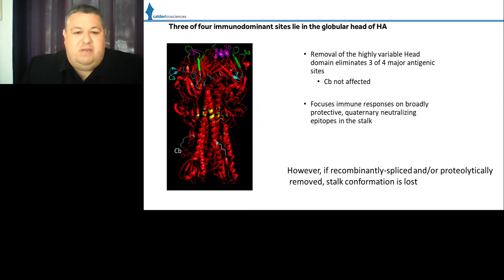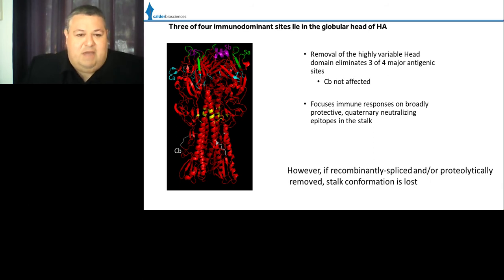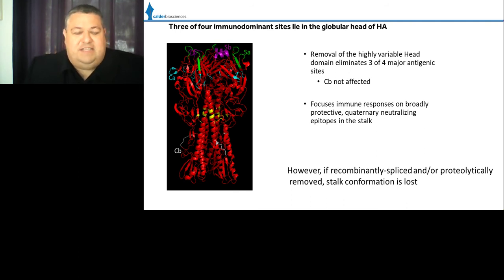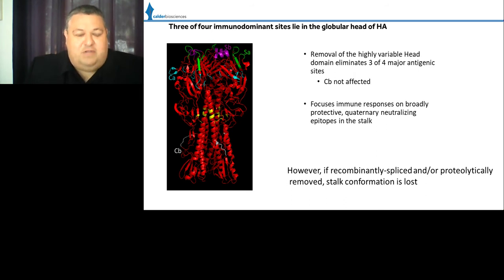The influenza hemagglutinin molecule also suffers from conformational instability when attempting to present a headless HA molecule or stalk domain only in the absence of the globular head. This approach is taken because the globular head domain contains the major antigenic sites. Upon infection the immune system targets this region, generating neutralizing antibodies; however, these antibodies are often strain-specific due to the process of antigenic drift, where the head mutates over time, which causes the vaccine to be updated on a yearly basis.